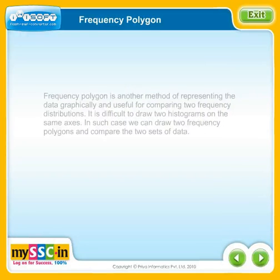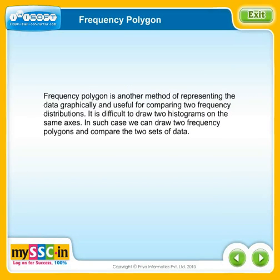Frequency polygon is another method of representing data graphically and is useful for comparing two frequency distributions. It is difficult to draw two histograms on the same axis. In such cases, we can draw two frequency polygons and compare the two sets of data. Let's see the steps to draw a frequency polygon on a graph paper.